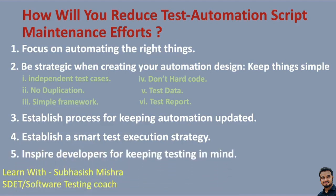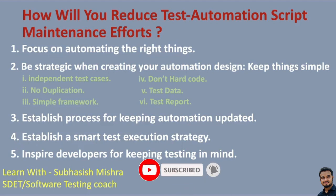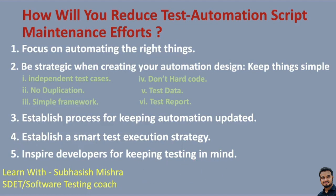The next point is to inspire developers to keep testing in mind. Collaboration with developers helps you a lot. You can always suggest your developers to keep test automation in mind during development — for example, defining a naming convention for UI elements like IDs, so that elements can be located even after UI changes and QA will not need to do a lot of automation changes. These are the few tips you can always use to reduce test automation script maintenance efforts, and you can explain all these points in your interview.